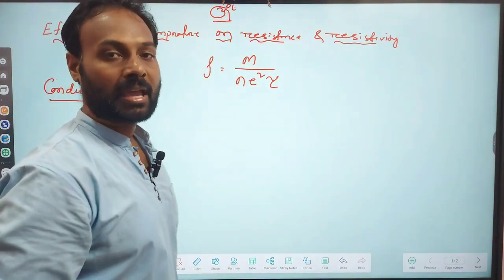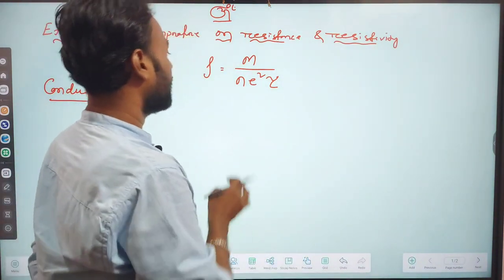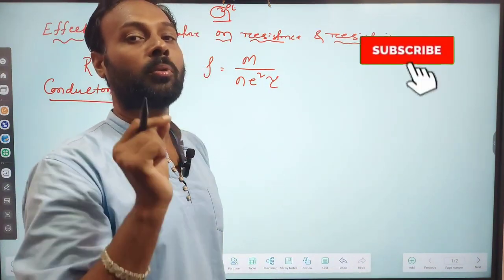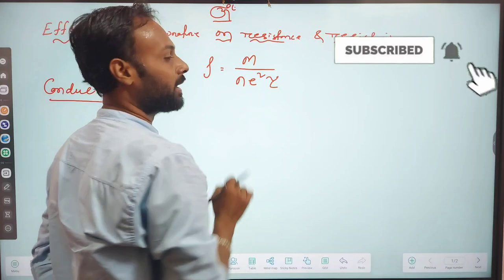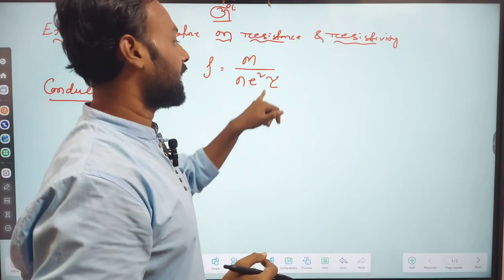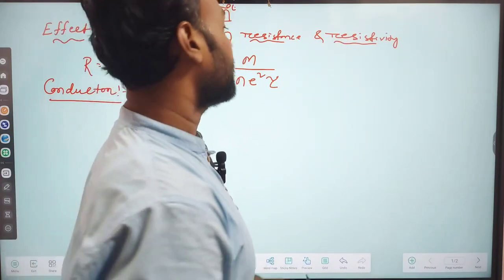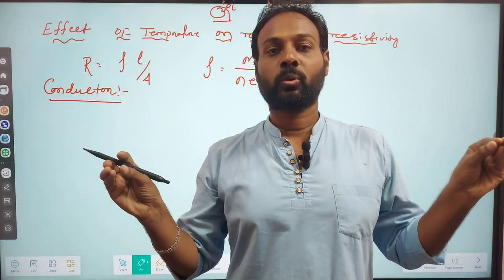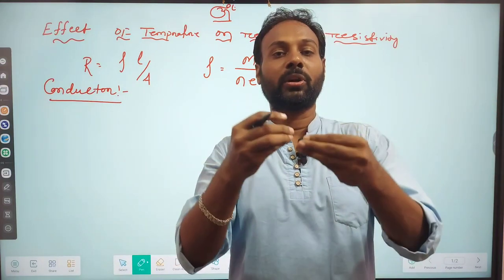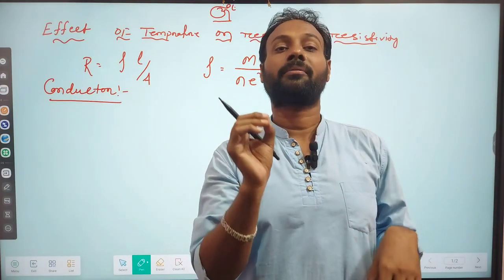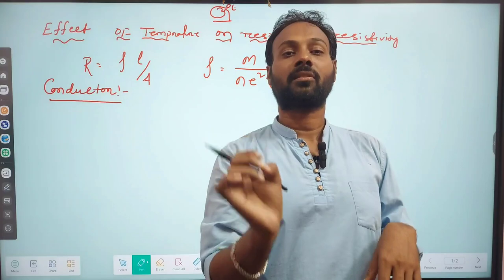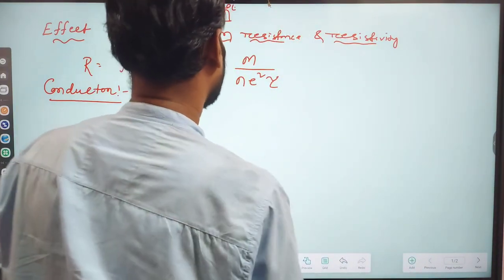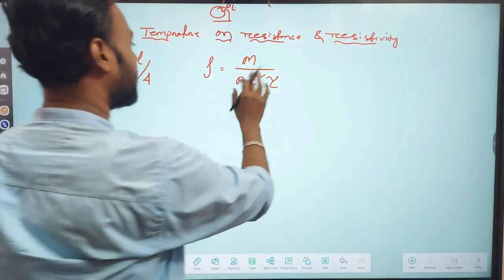So m is the mass of the electron and n is the electron density — that is, electron per unit volume. E squared is the charge of electron squared and tau is the relaxation time. If there is a successive collision between two electrons with a certain interval of time, that time is called relaxation time.